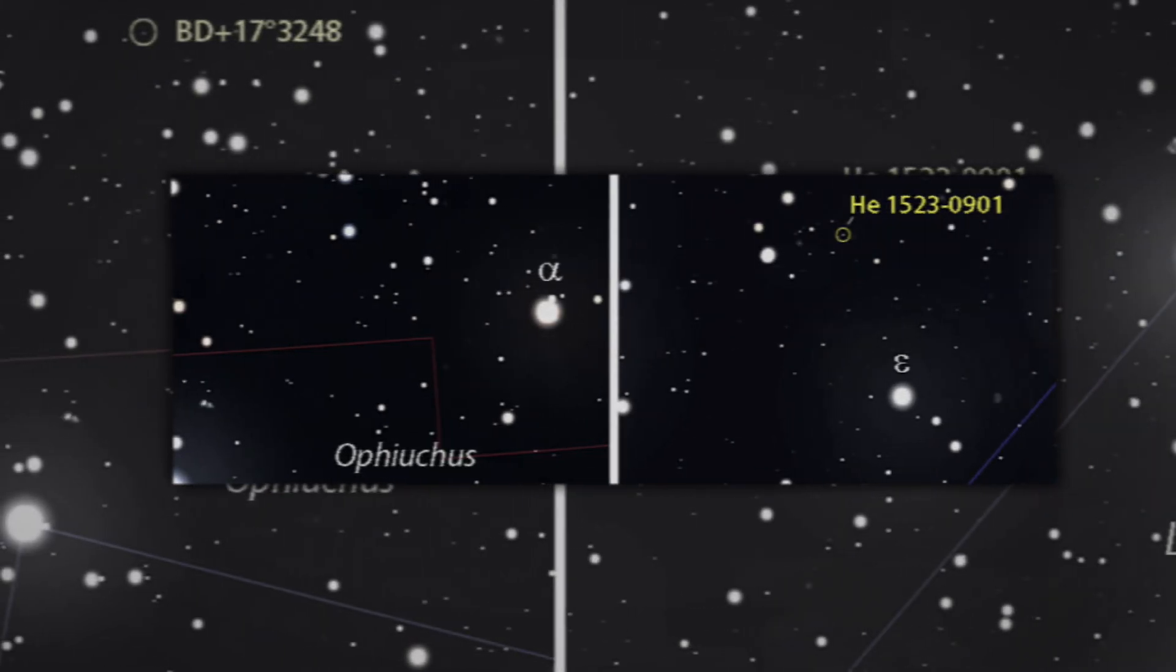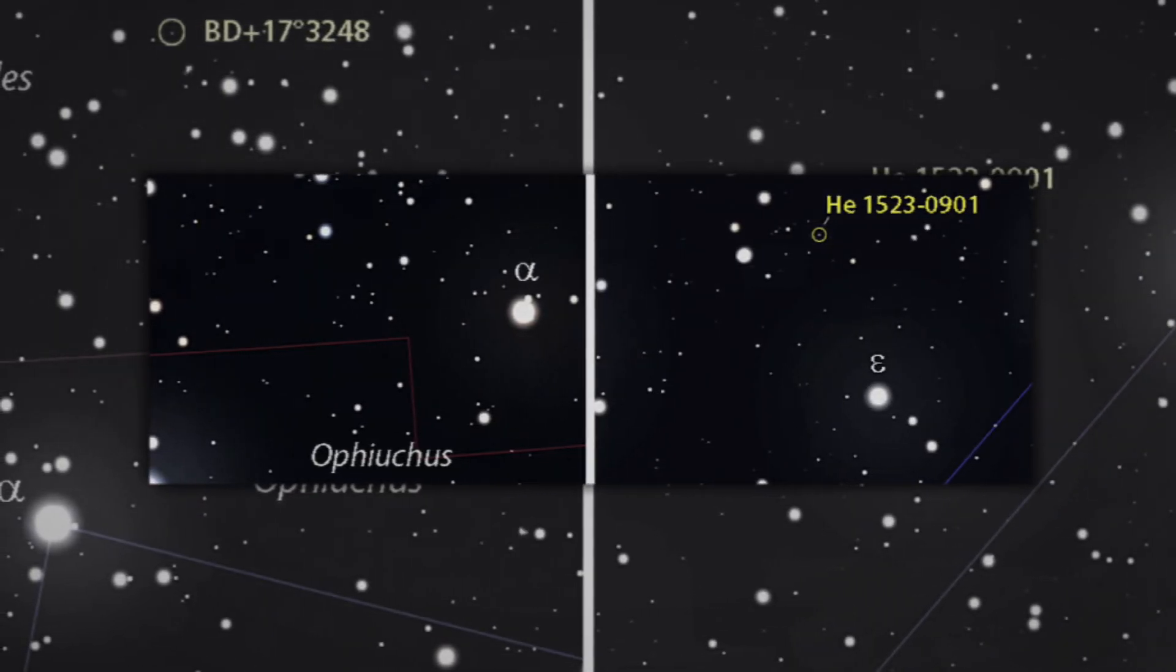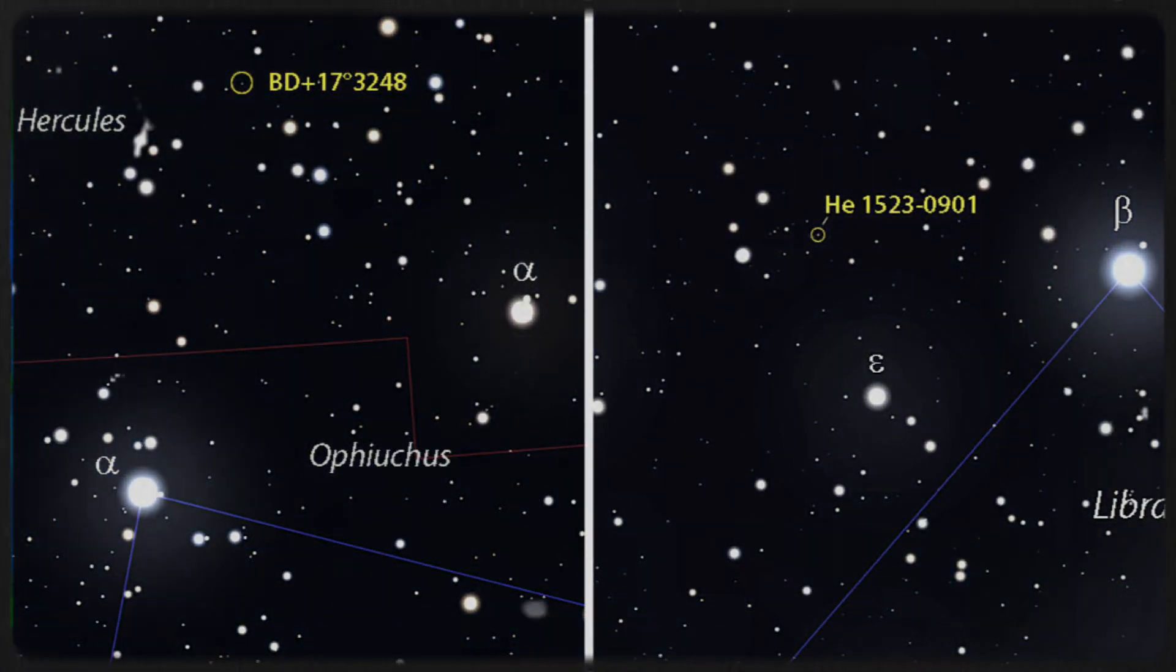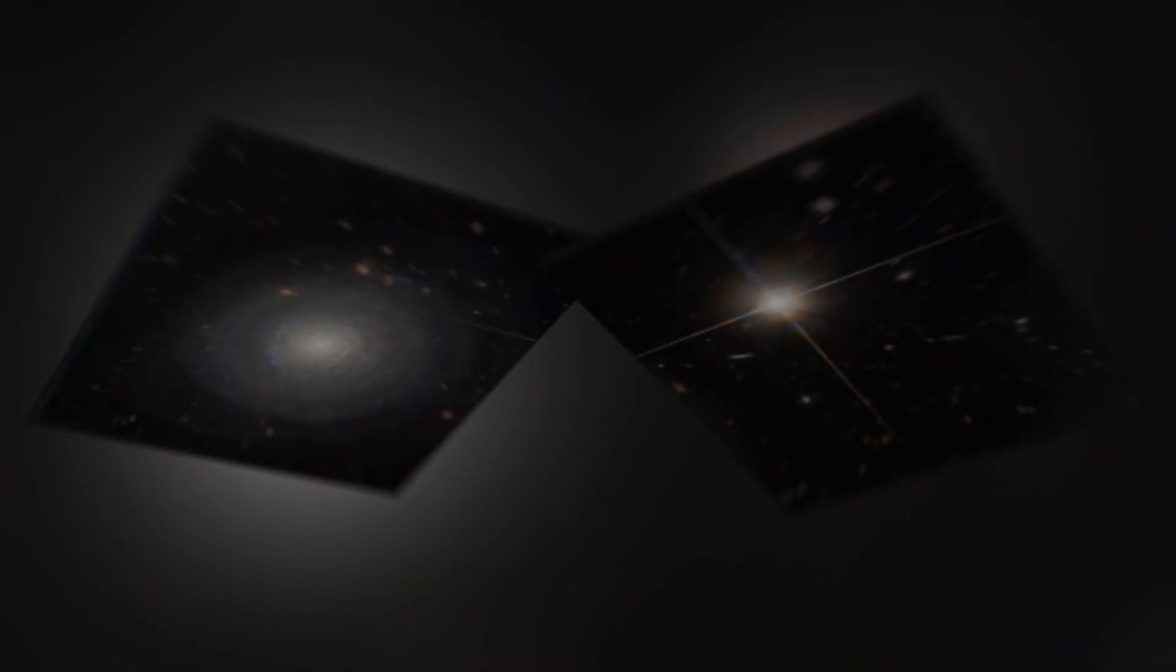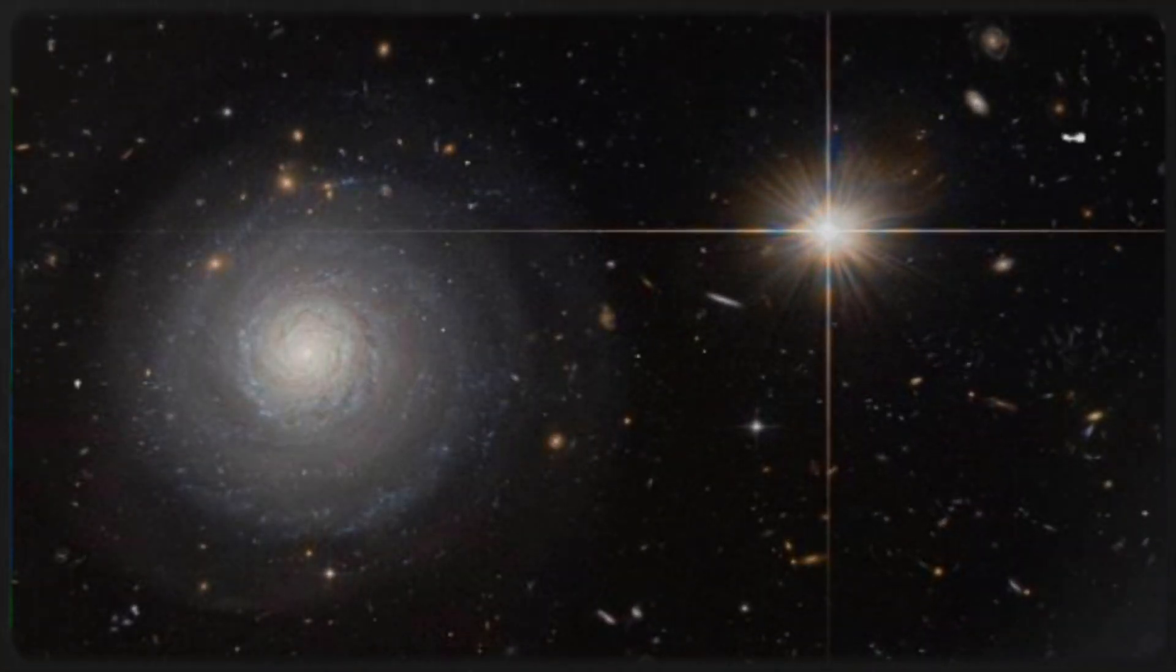Enter BD plus 17 degrees 3248, a star with an estimated age of 13.8 billion years. Using uranium decay to measure its age, scientists achieved a high degree of certainty about its ancient origins. However, this poses a significant problem. If BD plus 17 degrees 3248 is truly 13.8 billion years old, it couldn't have formed alongside the Big Bang.